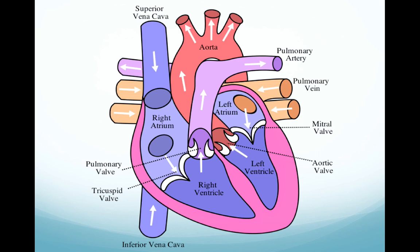The remaining two valves — the aortic valve and the pulmonary valve — are also called as a group the semilunar valves, and their flaps resemble half moons. The pulmonary valve lies between the right ventricle and the pulmonary trunk, which will eventually lead to the lungs. The aortic valve lies between the left ventricle and the aorta, and the aorta pumps blood to your body.